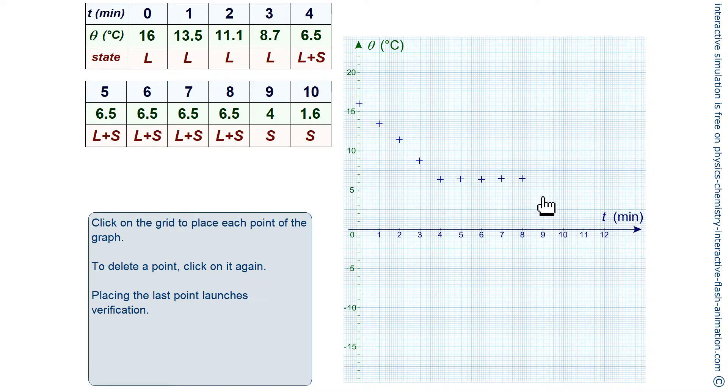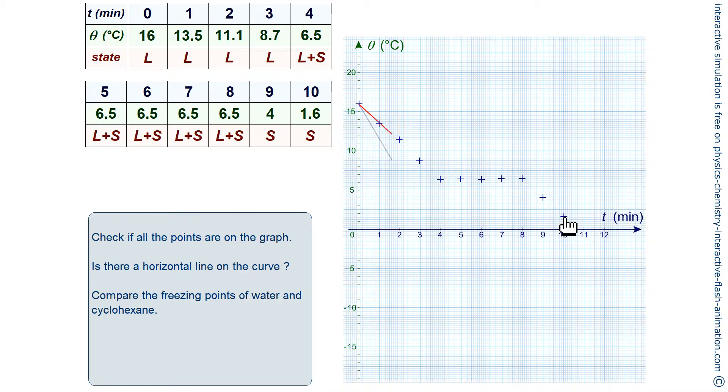Moreover, looking at the table we can already see it. The correction is displayed here. Indeed we have a horizontal line during solidification which confirms the fact that cyclohexane is a pure substance.